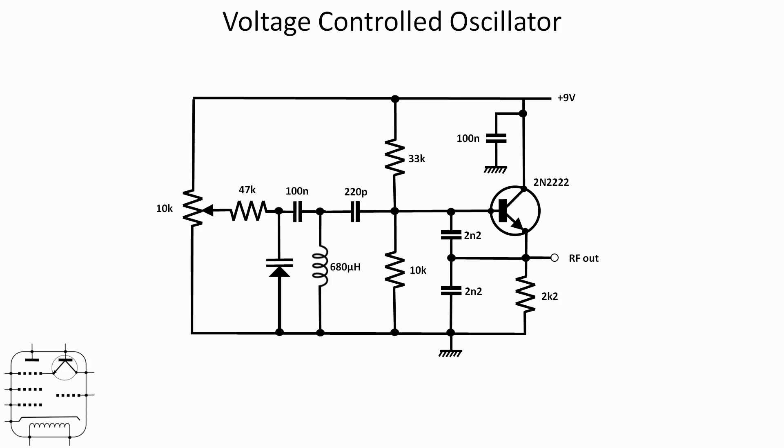We have got a 680 microhenry inductor and in parallel with that we've also got the varactor. The other bits to note really is we've got a biasing network the 33 and a 10k resistor for the base of the transistor and then over on the left hand side we've got a 10k pot feeding through a 47k resistor to the varactor and that pot is to allow us to vary the reverse bias level on the diode and the hundred nanofarad capacitor just to the right of it will stop any of that DC creeping through into the base of the transistor.